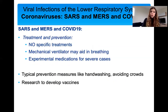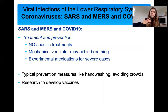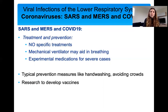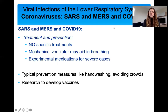Treatment and prevention: unfortunately there is no treatment as of right now. What we can do is supportive care — mechanical ventilators for people struggling to breathe due to lung inflammation. There are experimental medications for severe cases, and researchers are retesting medications that were being developed for MERS and SARS. Typical prevention is to wash hands, avoid crowds, wear face masks, and disinfect surfaces. There is a lot of research now to develop vaccines, because as of right now we have no vaccine for any of these three. Vaccine creation for SARS and MERS was stopped, so we're looking at old research to see if it can be applied to COVID-19.